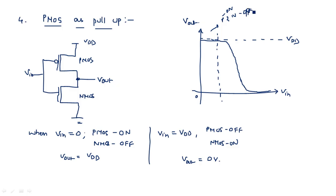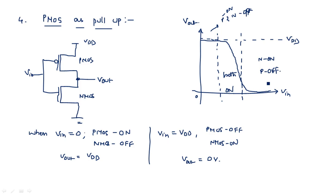In the first region of the transfer characteristics, P is ON and N is OFF giving output equal to VDD. In the middle transition region both transistors are momentarily ON. In the last region N is ON and P is OFF giving output equal to 0. These are the different forms of pull-up devices used to construct NMOS and CMOS inverters.